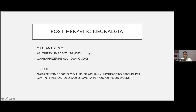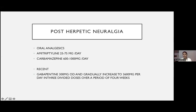For post-herpetic neuralgia, try oral analgesics — amitriptyline, carbamazepine, or gabapentin 300 mg, which can be gradually increased to 3600 mg in divided doses over four weeks. Abrupt start of antivirals can prevent post-herpetic neuralgia.